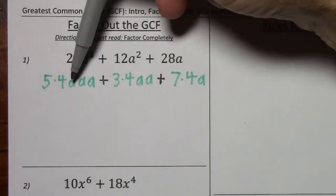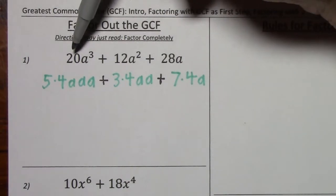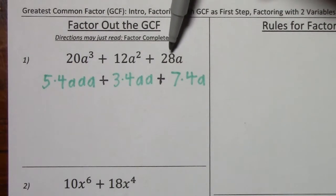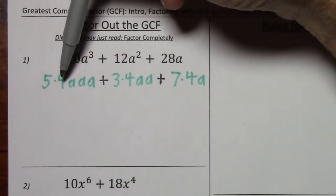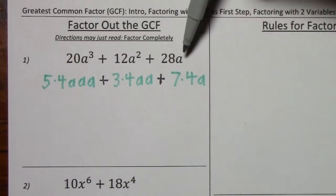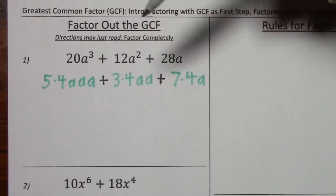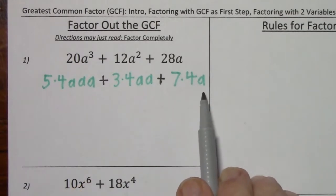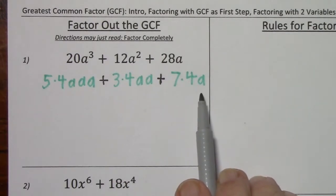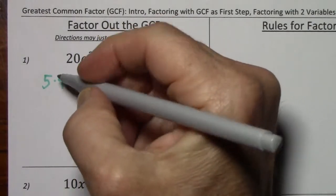Looking at the factored form of each term, for the coefficients of 20, 12, and 28, you can see that 4 is the greatest value that is common to each term. And for the variable, the greatest number of a's I can get out of each term is a single a — I can't get 2 or 3 a's out. I can only get 1 a. So the greatest common factor of each term is going to be 4a.